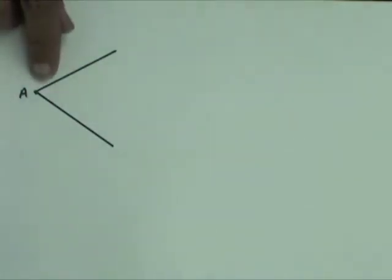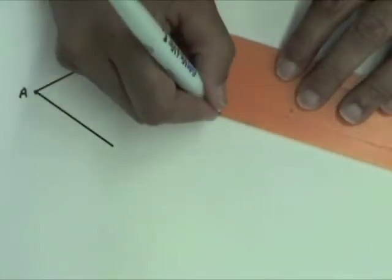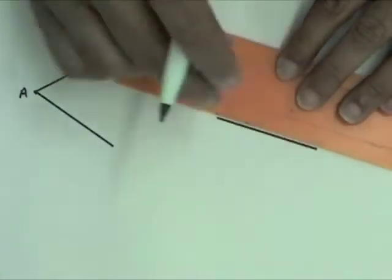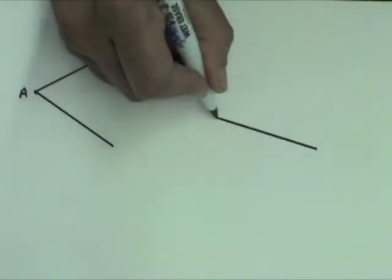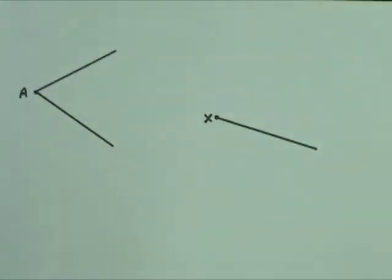Here is the angle A that we are going to copy. Draw a half line with one end point X. This will become one side of the copied angle.